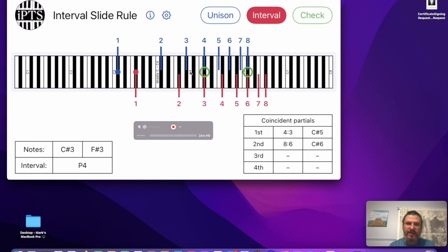Most people just assume that this is the one we're talking about. And you can look and see that it's the C sharp 5, which is two octaves above the bottom note, C sharp 3. And that's what we use to remember. Remember that the coincident partial for the fourth is two octaves above the bottom note.